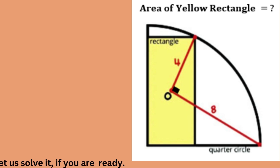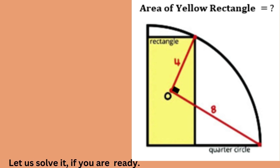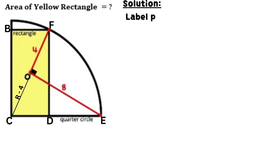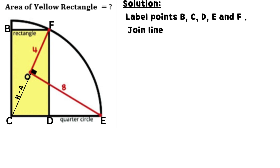Area of the yellow rectangle is what? Label points B, C, D, E, and F.